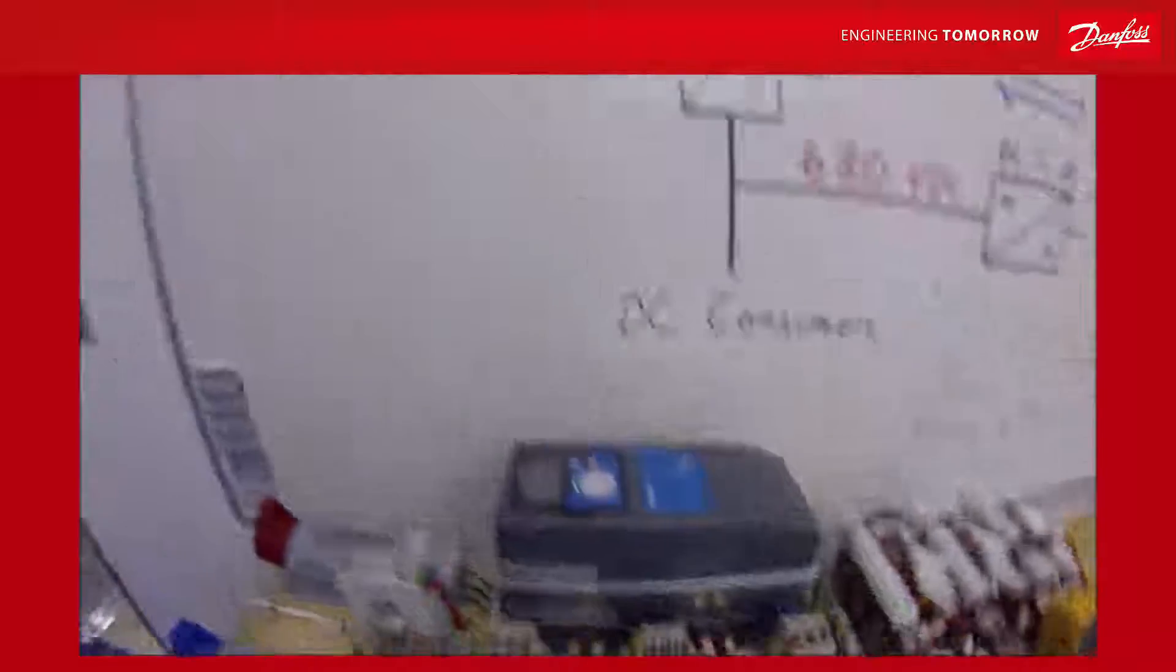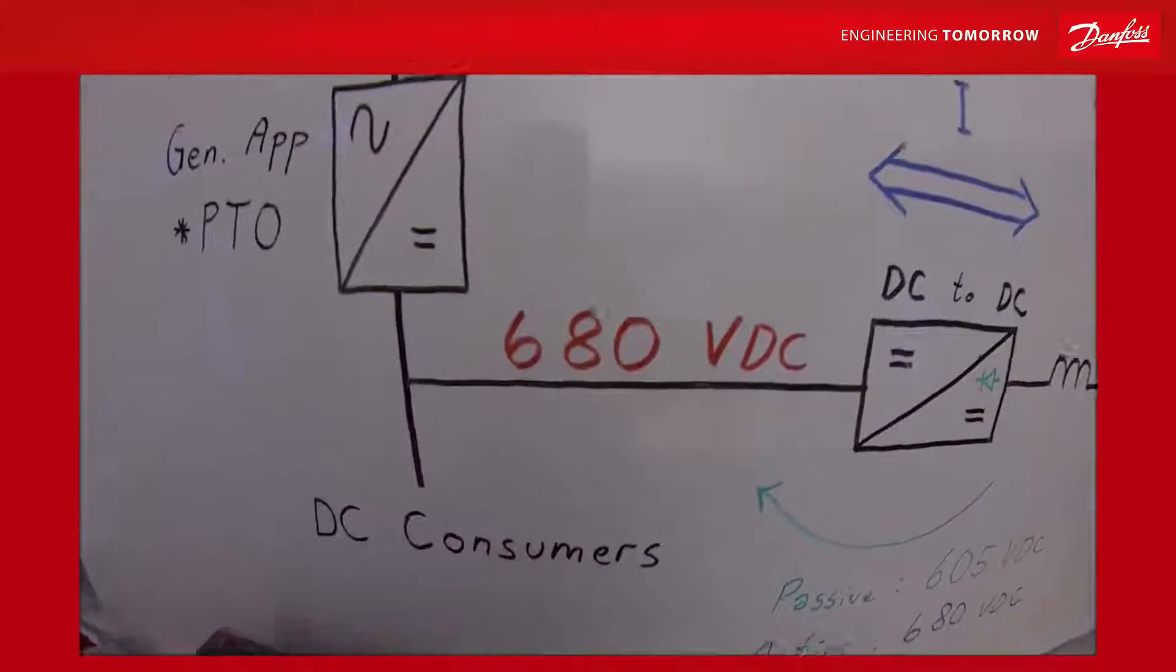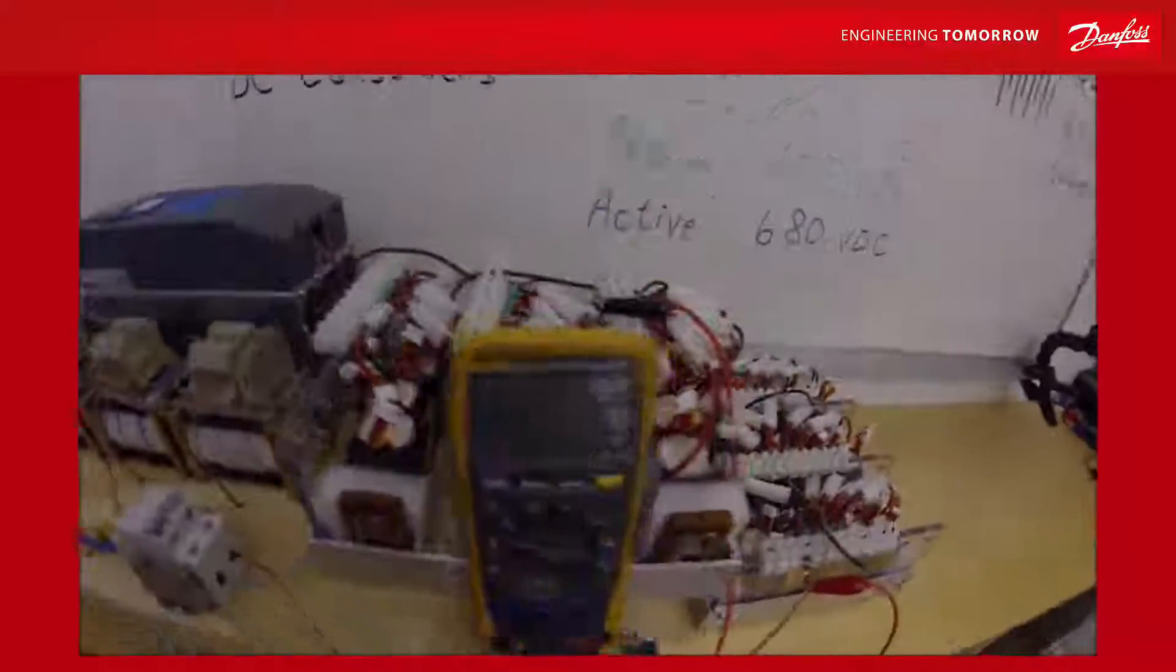And I have connected the DC link to my DC converter. So we are producing 680 volts here.